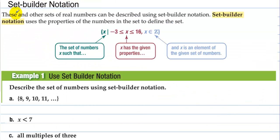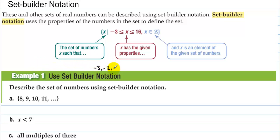Set builder notation. These and other sets of real numbers can be described using set builder notation, which uses the properties of the numbers in the set to define the set. For example: x such that x is between negative three and 16 and x is a member or element of the integers. So that means the set is negative three, negative two, negative one, keep on going, all the way up to 16 — all of those integers.